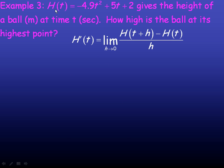In example 3, we're given this function h of t — the height at time t of a ball that's thrown — is negative 4.9t squared plus 5t plus 2. So that gives us the height at any time. h is in meters and time is measured in seconds. We're asked how high is the ball at its highest point.